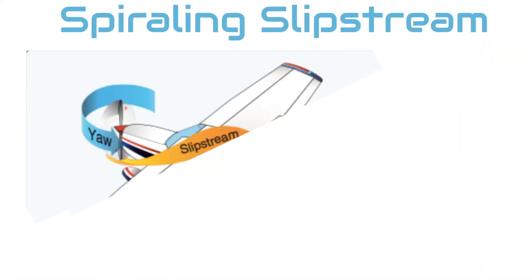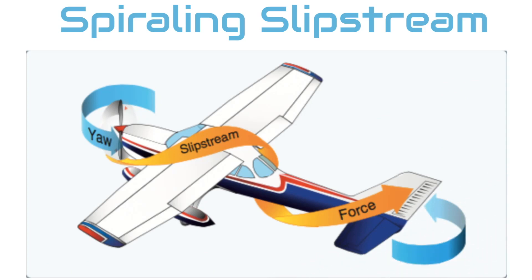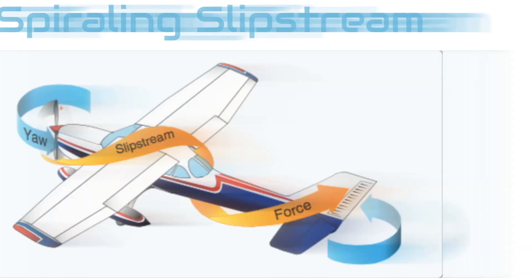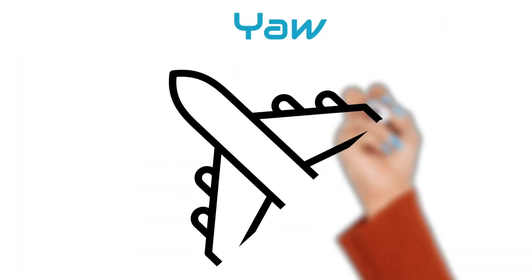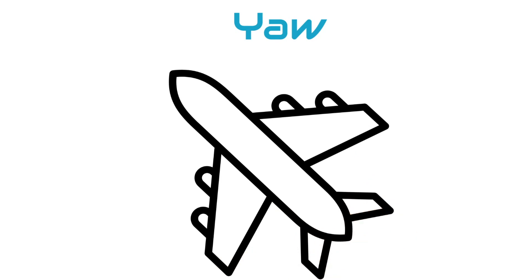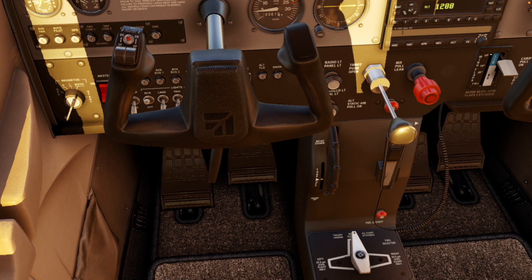Spiraling slipstream is a rotating airflow that moves around the fuselage and strikes the vertical tail surface at an angle. It creates a left-turning moment, causing the aircraft to yaw to the left. To counteract the spiraling slipstream effect, it is necessary to apply right rudder input.